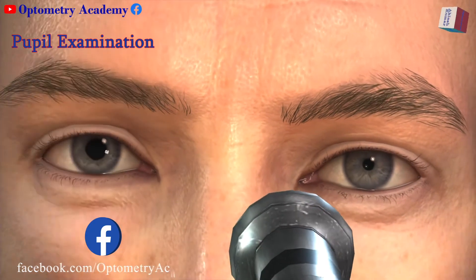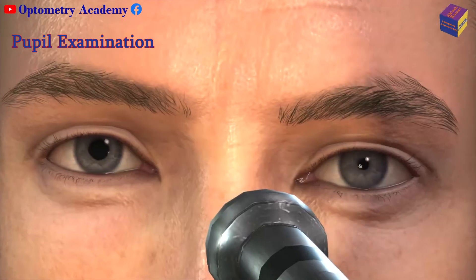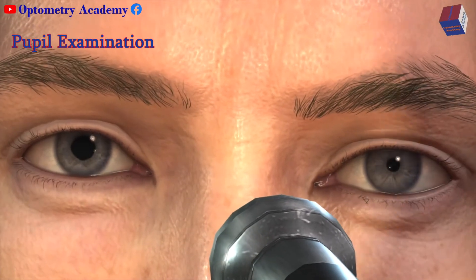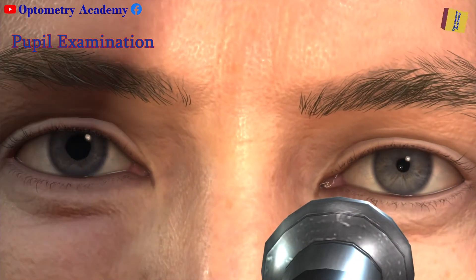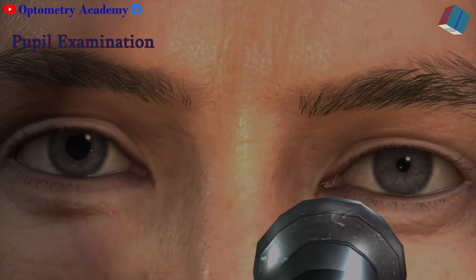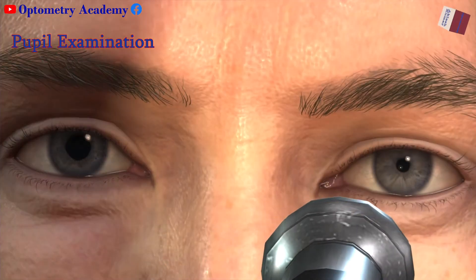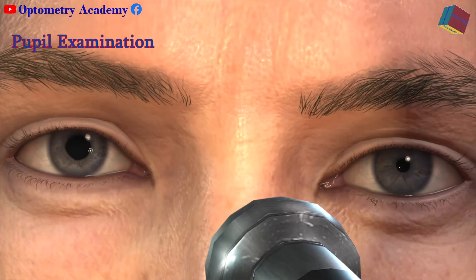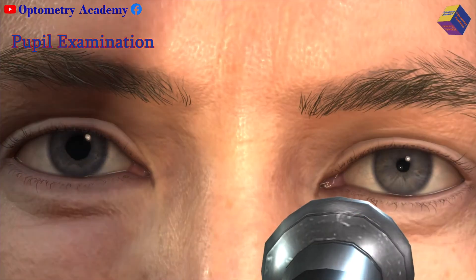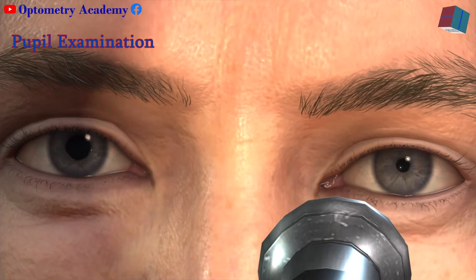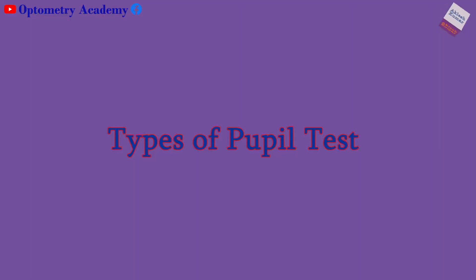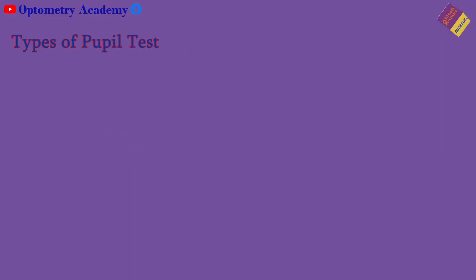In addition to checking whether the pupils are equal in size, an eye doctor will examine the size and shape of the pupils in both bright and dim light. Other tests conducted by an eye doctor include the speed and quality of the pupil responses to stimuli and your pupil reaction to near stimuli such as small print. There are three procedures that eye doctors use to test pupil reflexes.